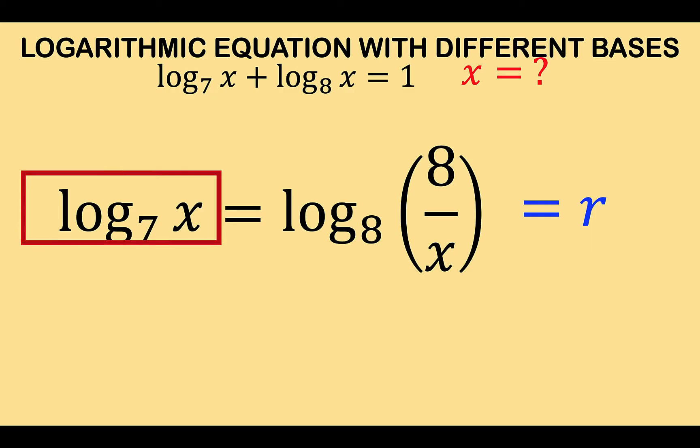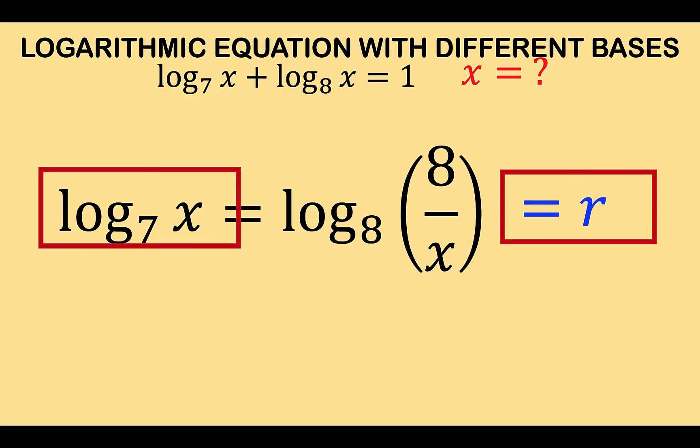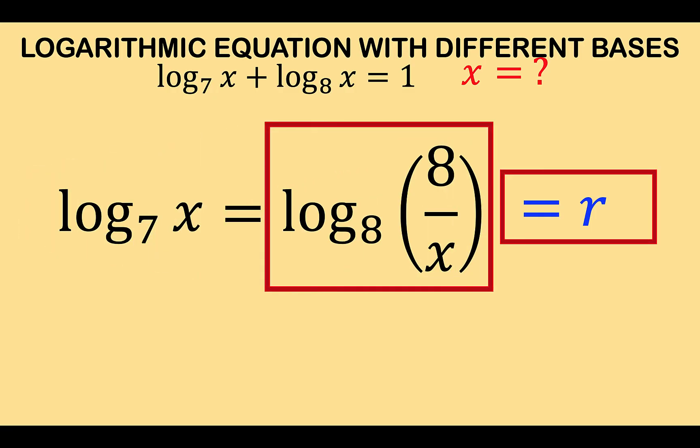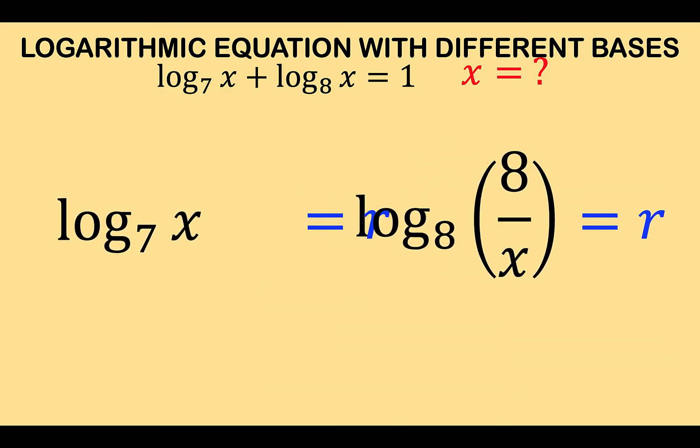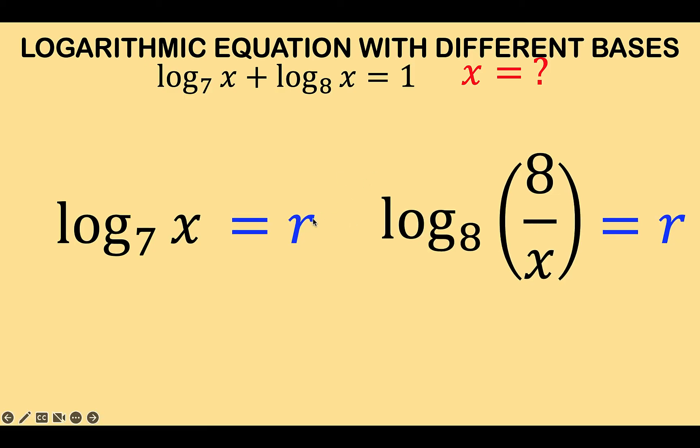So we now equate this left side of the equation to the dummy variable r and equate this right side of the equation to the same dummy variable r and we'll have two equations. So this is now the result. Each one of them equal to the variable r.